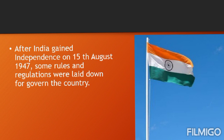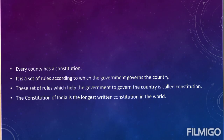After India gained independence on 15th August 1947, some rules and regulations were laid down for our country. Every country has a set of rules according to which the government governs the country. This set of rules which helps the government govern the country is called the Constitution.